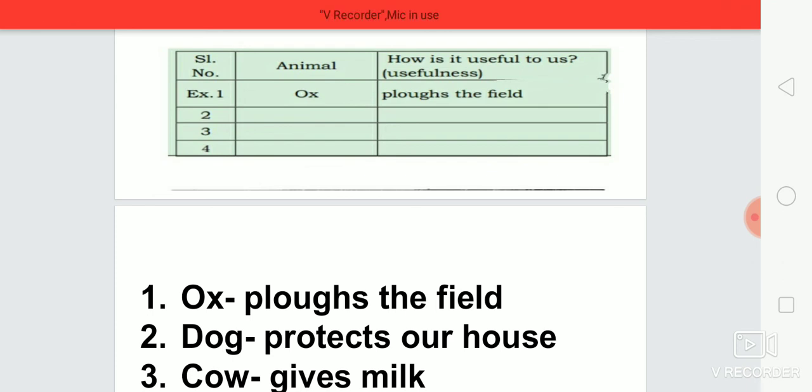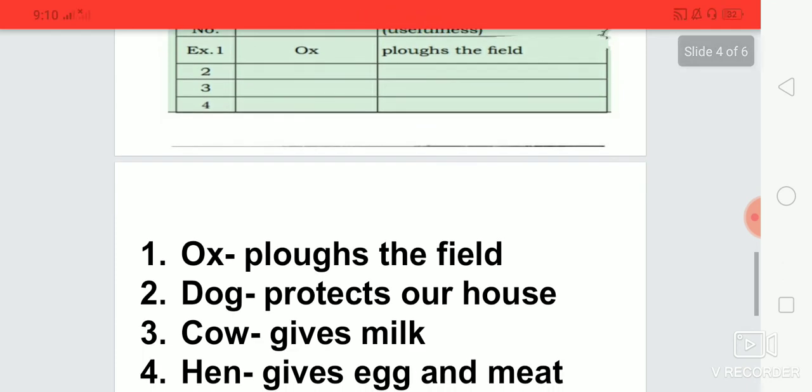Then last one, write down hen, H-E-N hen. How hen is useful for us? Write down gives egg and meat. Dear students, you have to write in your textbook, understand?